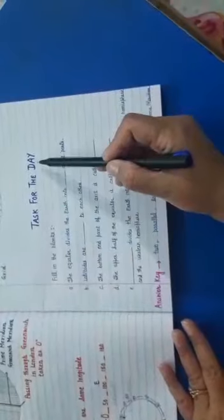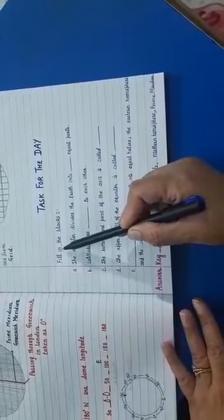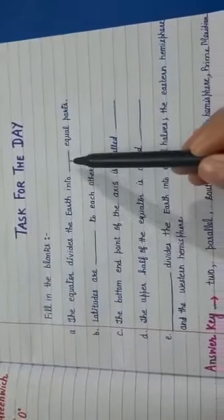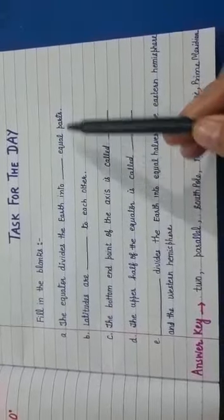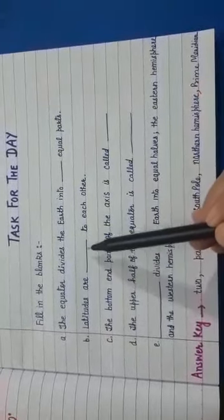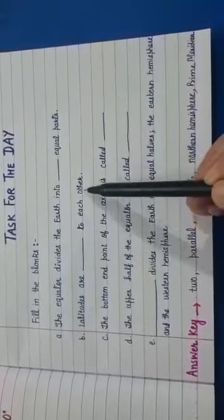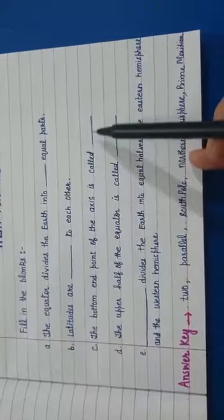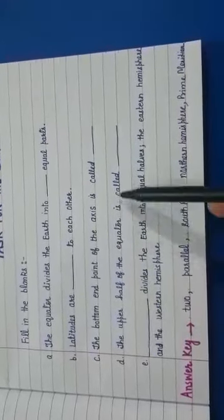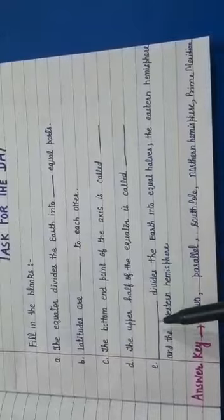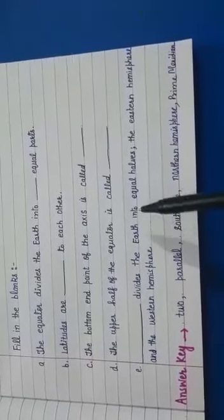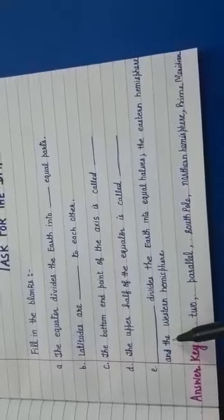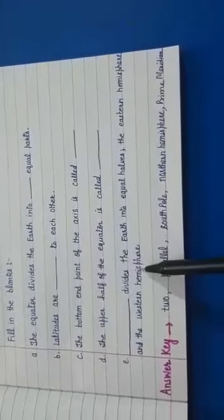Here is a task for the day. You have to fill in the blanks. The Equator divides the Earth into equal parts. Latitudes are blank to each other. The bottom endpoint of the axis is called blank. The upper half of the Equator is called blank. Blank divides the Earth into two equal halves: the Eastern Hemisphere and the Western Hemisphere.